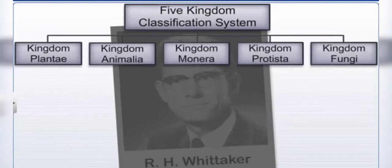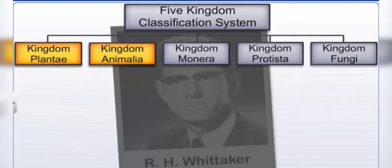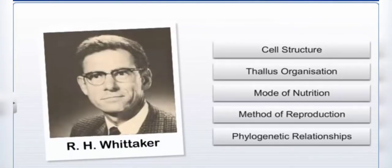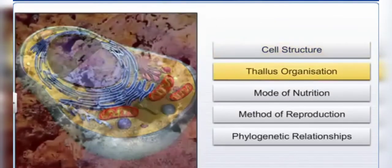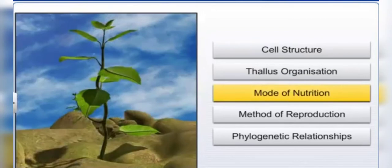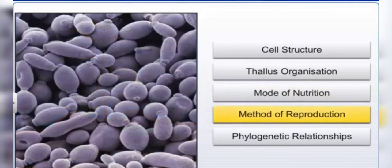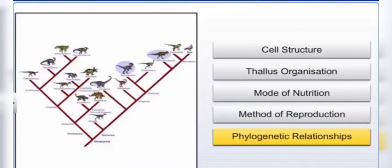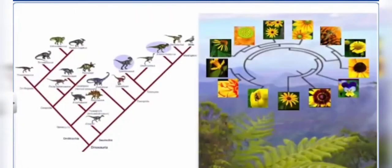In 1969, R. H. Whittaker proposed the five-kingdom system of classification, where three new kingdoms — Monera, Protista, and Fungi — were added to the existing kingdoms of Plantae and Animalia. The main criteria Whittaker used were cell structure, thallus organization, mode of nutrition, method of reproduction, and phylogenetic relationships.